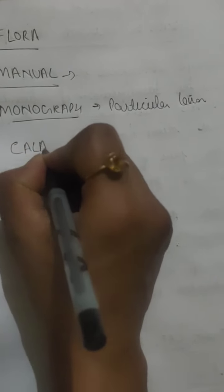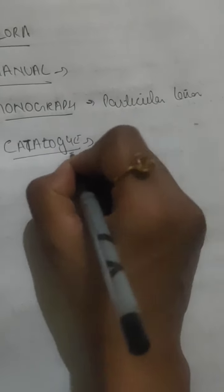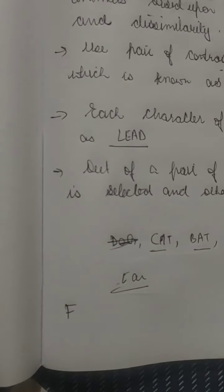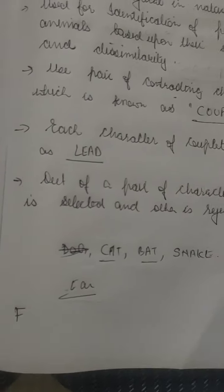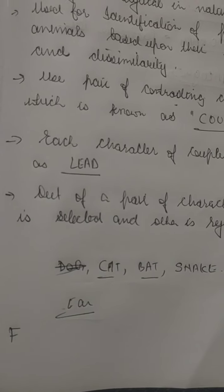The last taxonomical aid is catalogue. A catalogue is an index or book in which plant species are arranged in alphabetical order, and it also defines information about the description and features of those plants. This makes it very easy to search and identify any plant by name. This is the end of the chapter — please do the questions and answers at the end. Take care of yourself. Thank you.